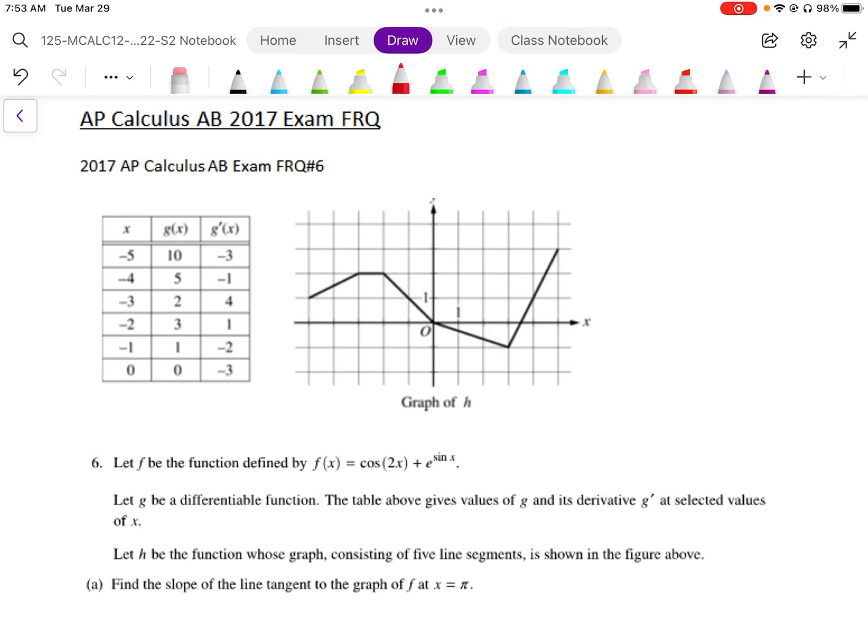Number six from the free response section of the 2017 exam involves being given some information in a table, in a graph, and also as a function as they've given us here with F.